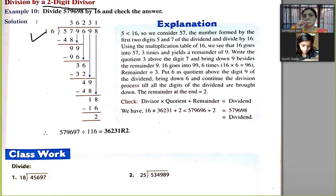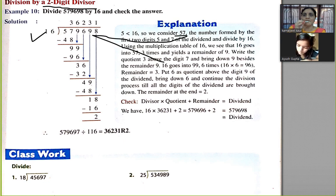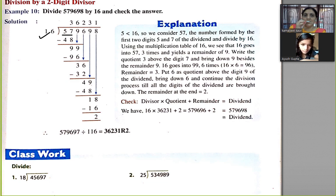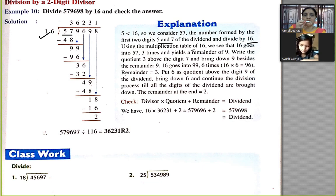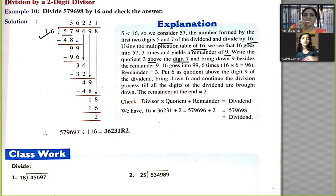Division by a two-digit divisor. For example, dividing by 16. Since 5 is smaller than 16, we consider the first two digits — 57. Using the table of 16: 16 goes into 57 three times with a remainder of 9. Write 3 as the quotient above digit 7, then bring down the next digit beside the remainder 9 to get 99.